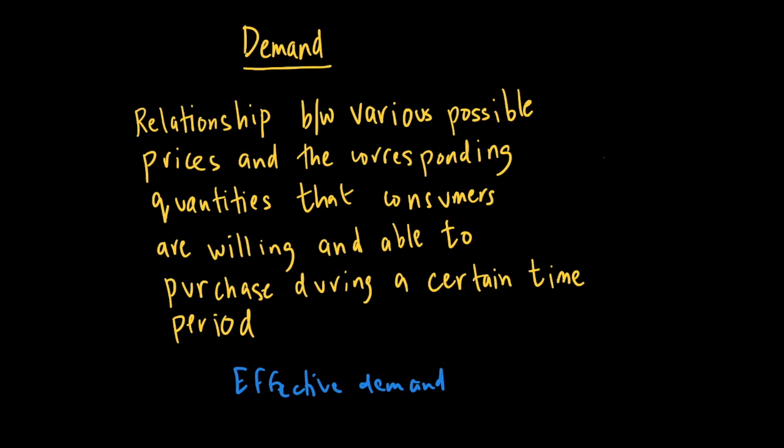That's another key thing to remember. The last thing to remember is that when you look at demand — demand for cars or demand for any good — we look at it in a certain time period. There's a particular period we're looking at, so it shows you how the price and quantity demanded will change for different levels of prices.